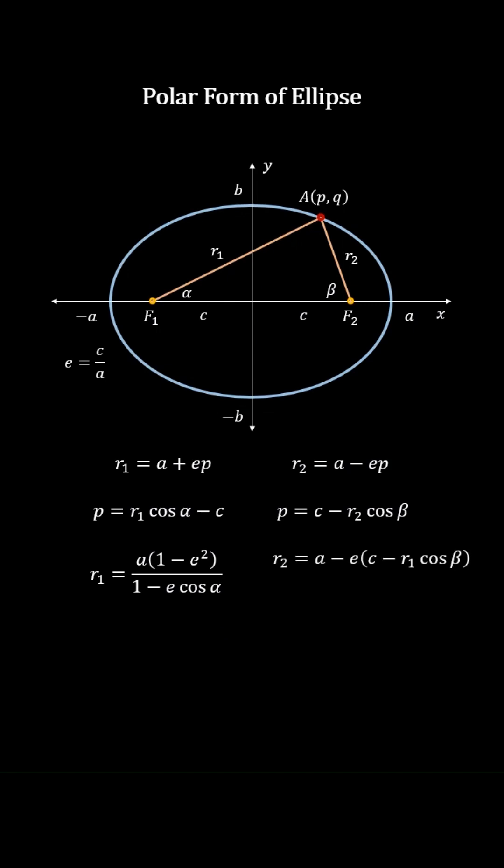R1 equals A times 1 minus E squared over 1 minus E cosine alpha, and R2 equals A times 1 minus E squared over 1 minus E cosine beta. If beta prime is the exterior angle pi minus beta, then R2 equals A times 1 minus E squared over 1 plus E cosine beta prime.